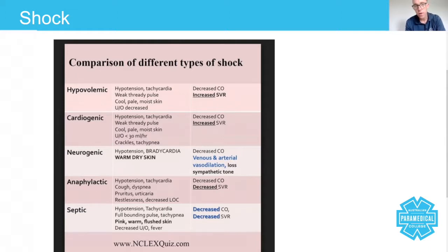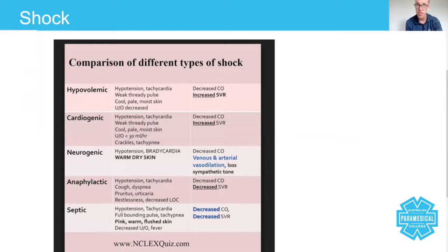Now when we talk about signs and symptoms, there are always going to be different stages of shock: compensated, a middle ground where it starts to become uncompensated, and then decompensated shock. This table shows a mixture of these rather than going into specific detail. With hypovolemic shock, you can expect low blood pressure at the end stages, tachycardia from the outset because your body is trying to pump hard to get blood around the body, and the pulse is weak and thready because of low volume. The patient will be cool, pale, and moist because they are hypoxic.